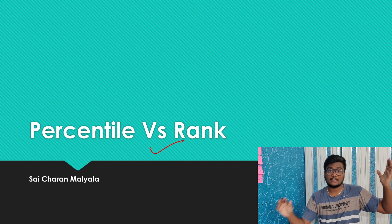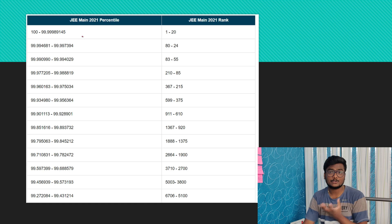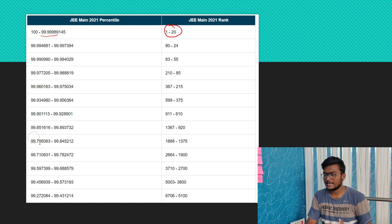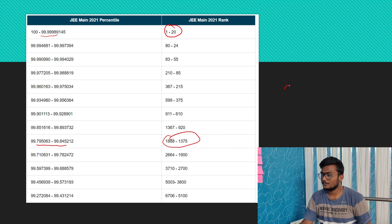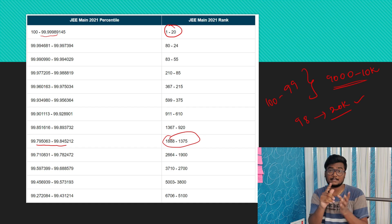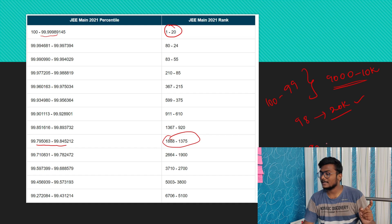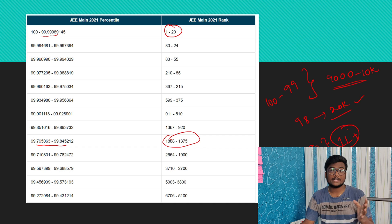How is your rank calculated from the percentile? Based on the tie-breakers and who scored highest, ranks are distributed. Those who scored 100 to 99.99989145 percentile can get ranks 1 to 20. From 100 to 99 percentile, you can find roughly 9,000 to 10,000 students. Those who get 98 percentile will have a rank near 20k. Approximately 9k to 10k students fall within each one-percentile band — between 100 and 99 is 10k, between 99 and 98 is another 10k. Those who score 90 percentile will have a rank above 1 lakh in the open category.